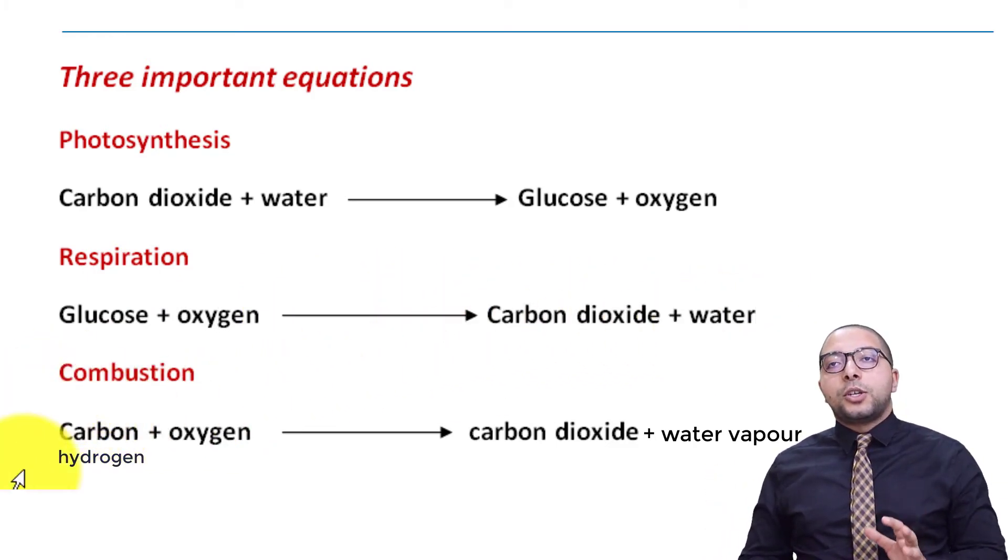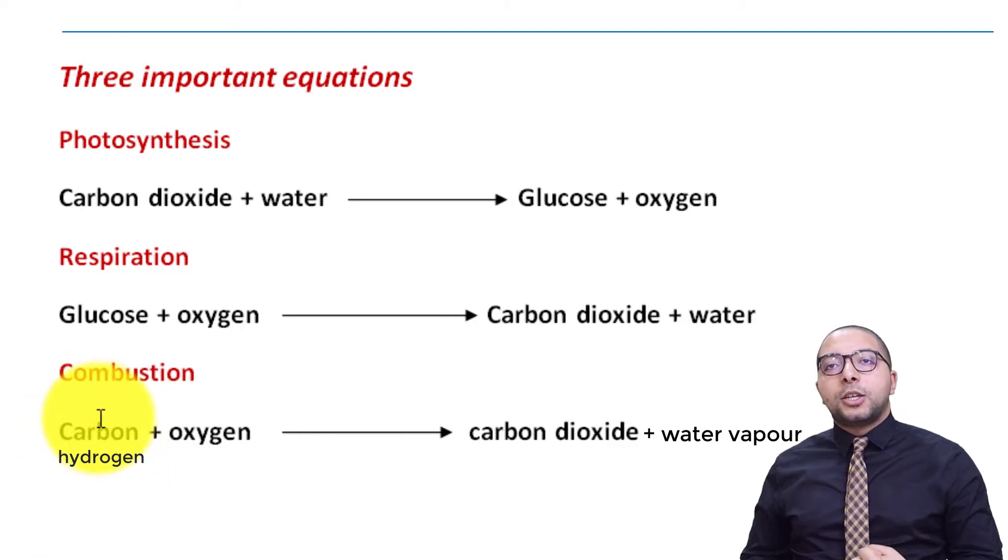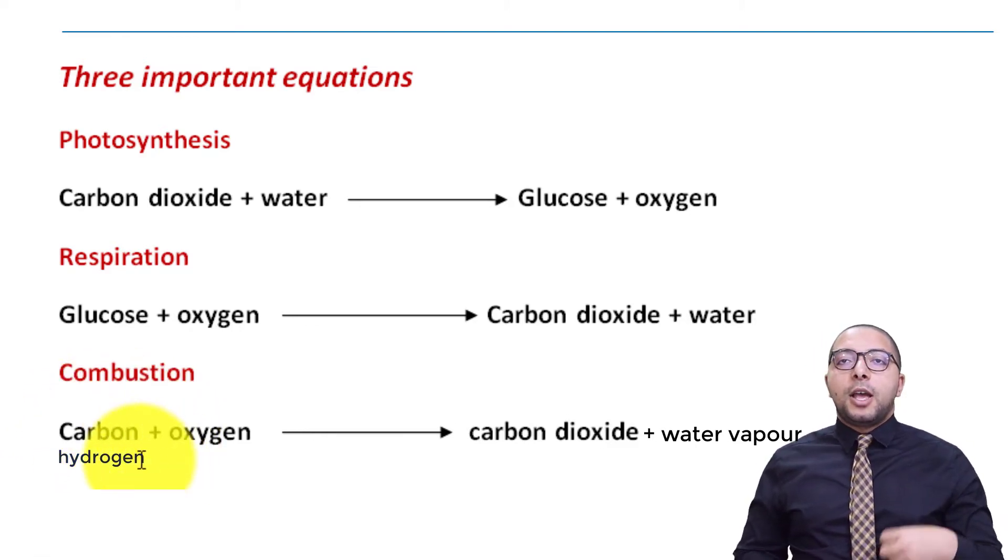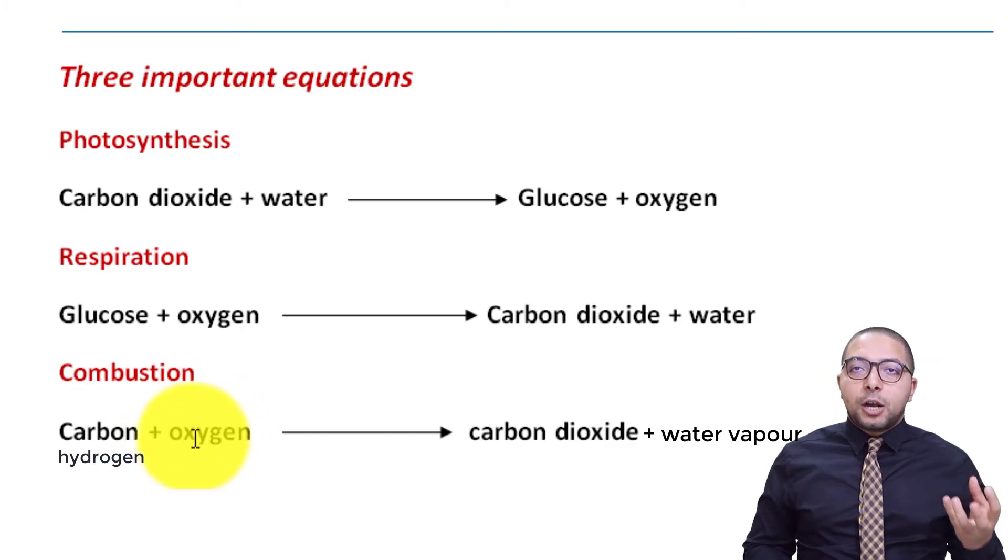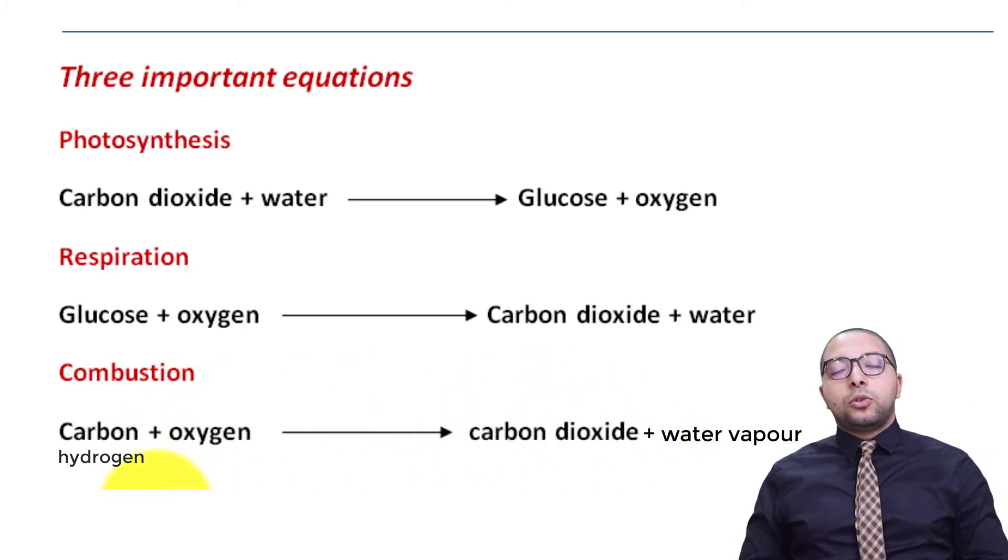The last equation that we're going to talk about is combustion. Combustion is a process where we burn like fossil fuel in order to get energy and this process mainly discusses how we burn the fuel that contains carbon in the presence of oxygen to produce carbon dioxide and water vapor. So these three processes are very important for you in order to understand the carbon cycle that's going to start right now.